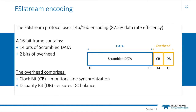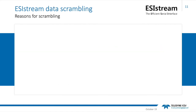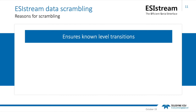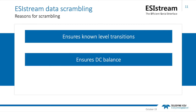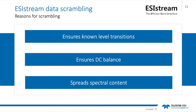EasyStream uses 14-bit to 16-bit encoding, giving it an 87.5% data rate efficiency. In other words, the encoding takes 14 bits of raw data and adds two bits of protocol overhead. The overhead comprises a clock bit, which provides a data line monitor of continuous link synchronization, and a disparity bit, which is used to ensure DC balance is maintained in each data lane. The resulting 16-bit EasyStream frame comprises a scrambled version of the data word combined with the previously mentioned overhead bits. Note that EasyStream scrambling can usefully be disabled to help ease system debug when needed. Why the need to scramble the raw data signal? This all boils down to an engineering response to the challenges of transmitting data over high-speed links.